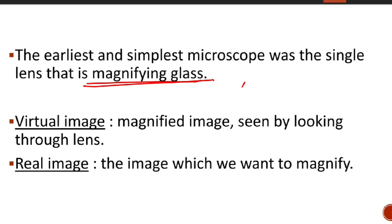The earliest and simplest microscope was the single lens — the magnifying lens or hand lens. We have seen in detective movies that the detective holds a hand lens to examine things. The simplest microscope was the magnifying glass, which allowed us to see small things in a larger shape and notice the details.